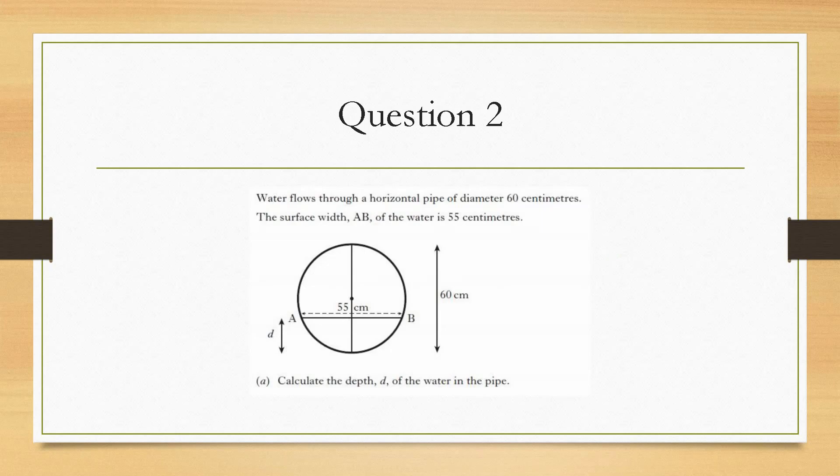So, if we take a look at question number 2. Question number 2 gives us a horizontal pipe with a diameter of 60 centimetres and it tells us that the surface width of the water, AB, is 55 centimetres and it gives us a height of d, which is the depth of the water.